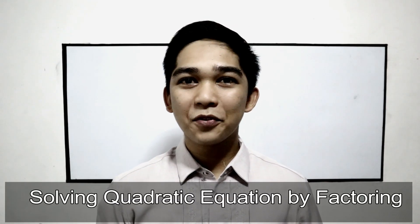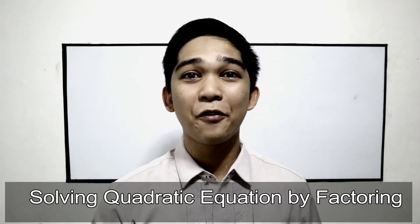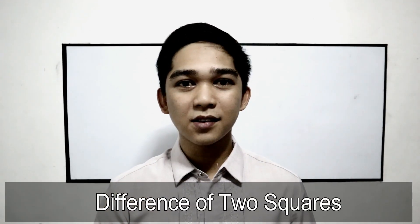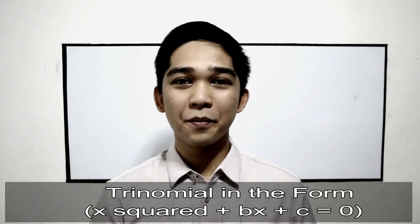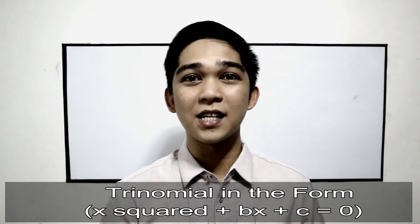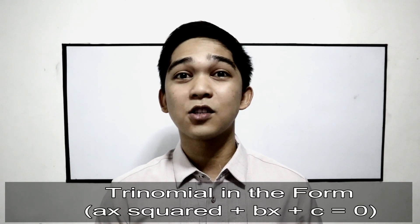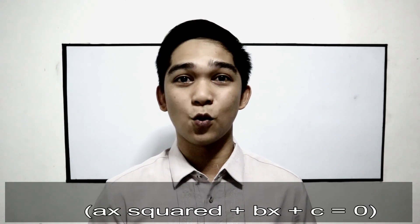Welcome to your lesson 2, Solving Quadratic Equations by Factoring. In your previous grade, in grade 8, you already discussed the different factoring techniques. We have the greatest common factor, the difference of two squares, trinomial with the form x squared plus bx plus c equals 0, and trinomial in the form ax squared plus bx plus c equals 0.